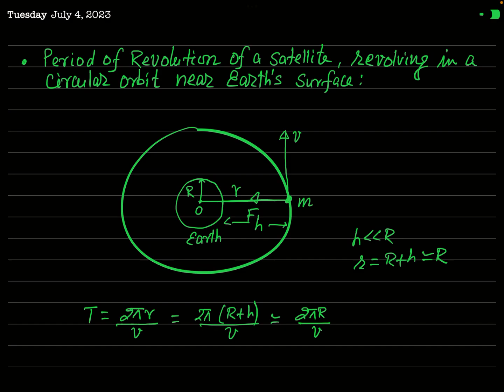Surprisingly, the time period will also be 84.3 minutes. If v is the speed of this satellite, the time period is T = 2πR/v, since 2πR is the distance covered in one revolution. Now we need to find the orbital speed v.